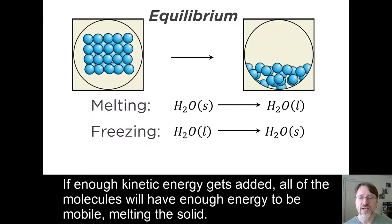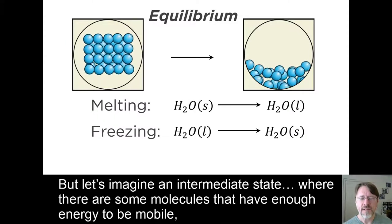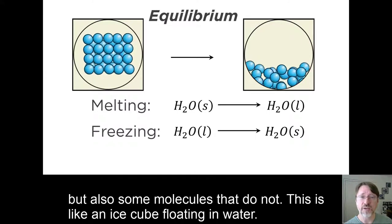If enough kinetic energy gets added, all of the molecules will have enough energy to be mobile, melting the solid. But let's imagine an intermediate state, where there are some molecules that have enough energy to be mobile, but also some molecules that do not. This is like an ice cube floating in water.